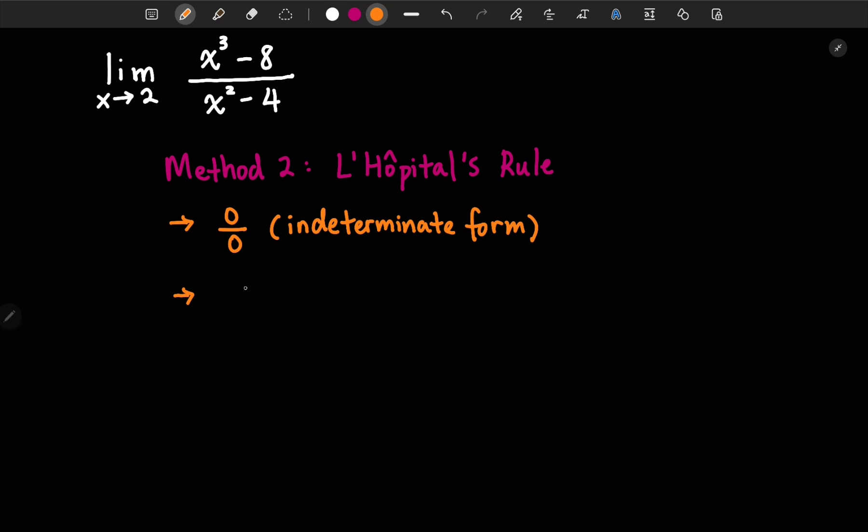And what L'Hôpital's rule tells us is that if we take the limit of x equal to c, on top we have a function f of x, on the bottom we have g of x, and if the limit of this is an indeterminate form, then we know the limit of our original function is also equal to the derivative of the top and bottom functions, which in here we have f(x) prime on top and g(x) prime on the bottom.